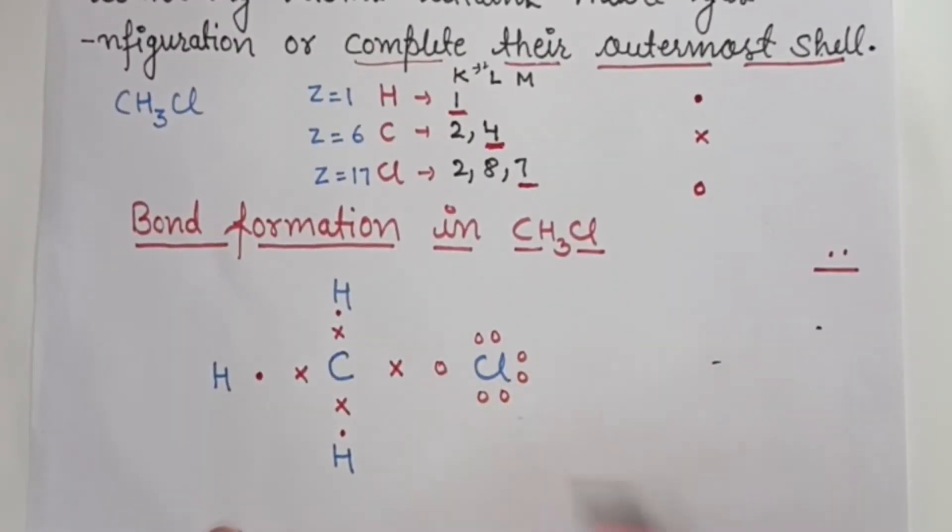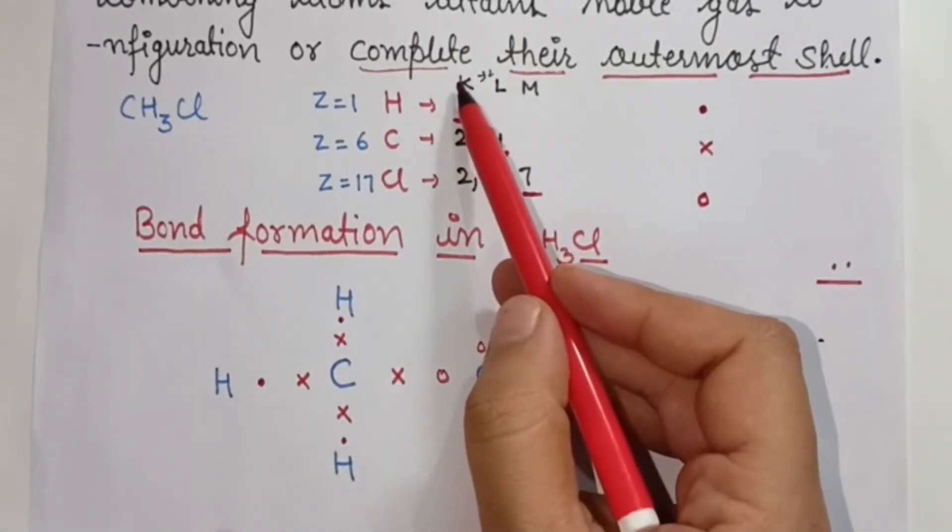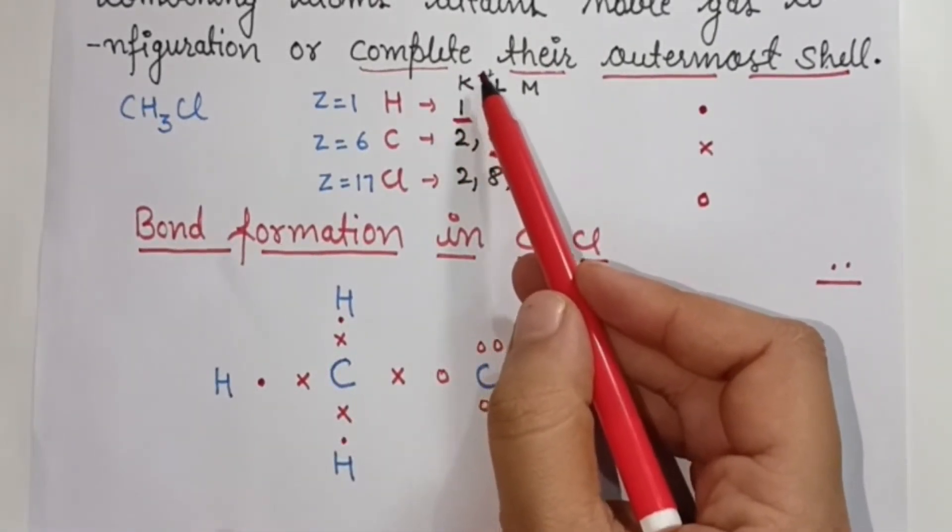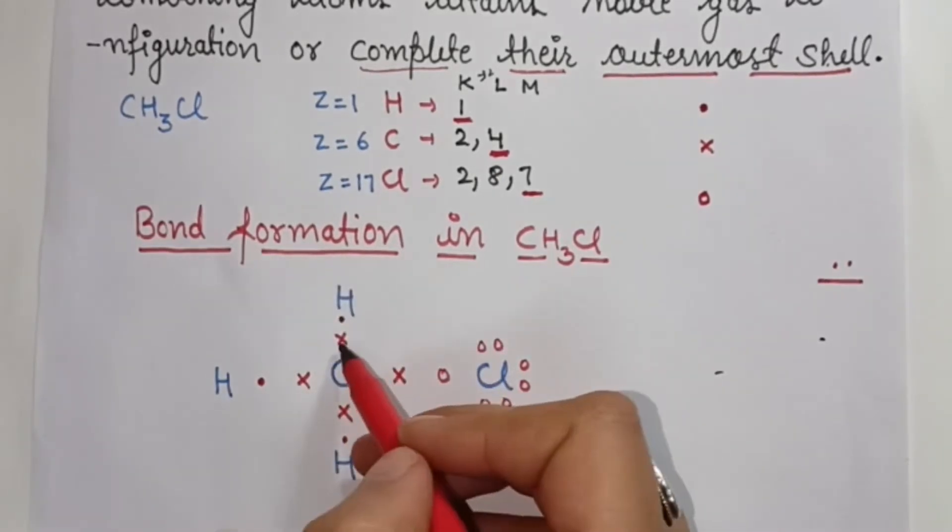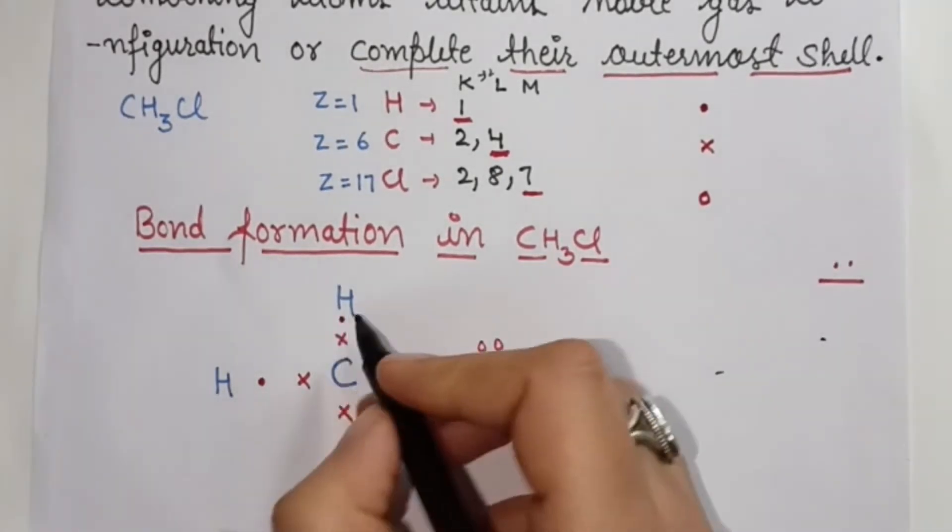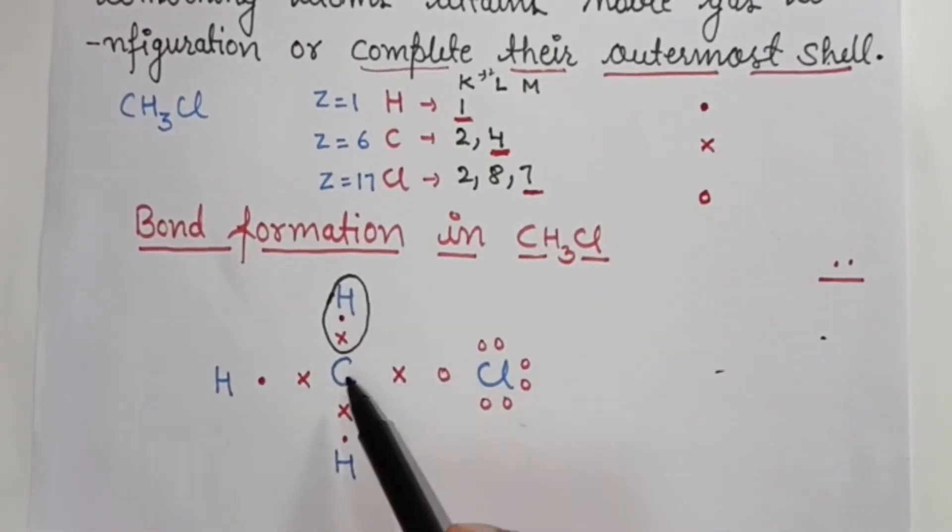Now let's see this practically. Hydrogen has 1 electron in K-shell, and K-shell can accommodate maximum 2 electrons. So hydrogen's outermost shell needs 2 electrons. Hydrogen will share this with carbon, and a bond will form to complete its outermost shell.